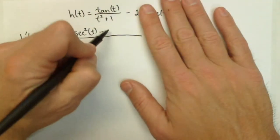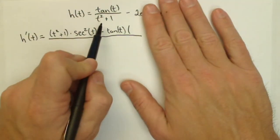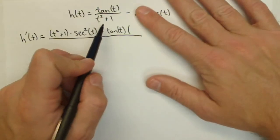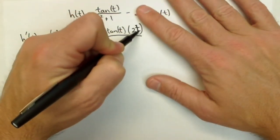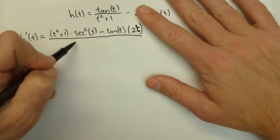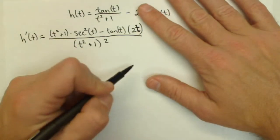Now we're going to hold the numerator constant, tangent of t times the derivative of the denominator, which is 2t. All over the denominator squared, t squared plus 1, the quantity squared.